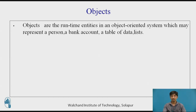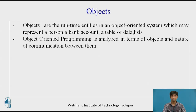Objects are nothing but basic runtime entities in an object-oriented system. They may represent a person, a bank account, a table of data, or any item that the program has to handle. They may also represent user-defined data such as vectors, time, and lists. An object-oriented problem is analyzed in terms of objects and the nature of communication between them. Objects should be chosen such that they match closely with the real-world objects.